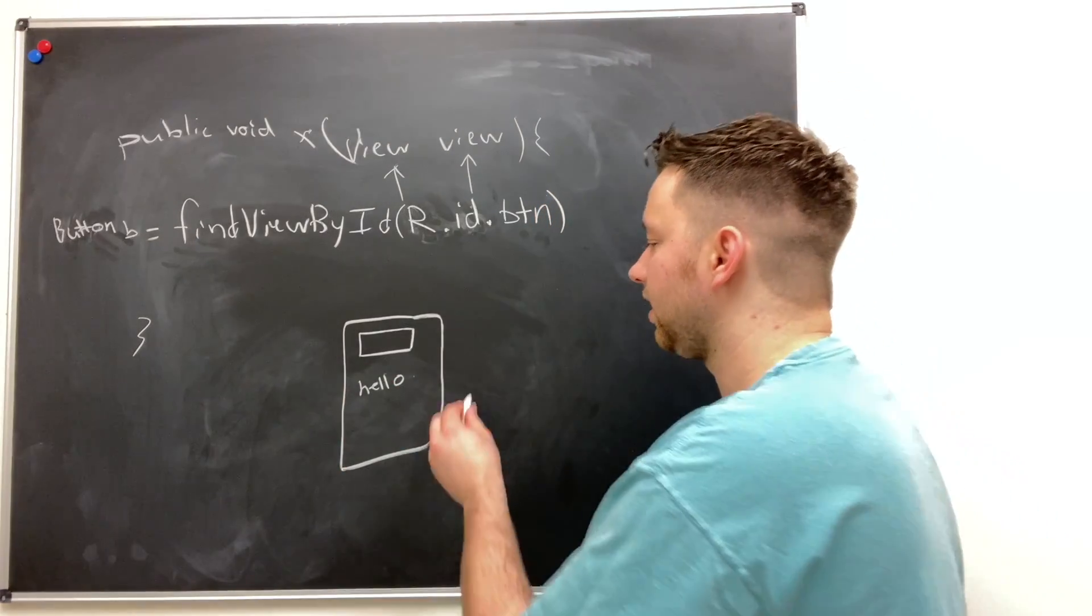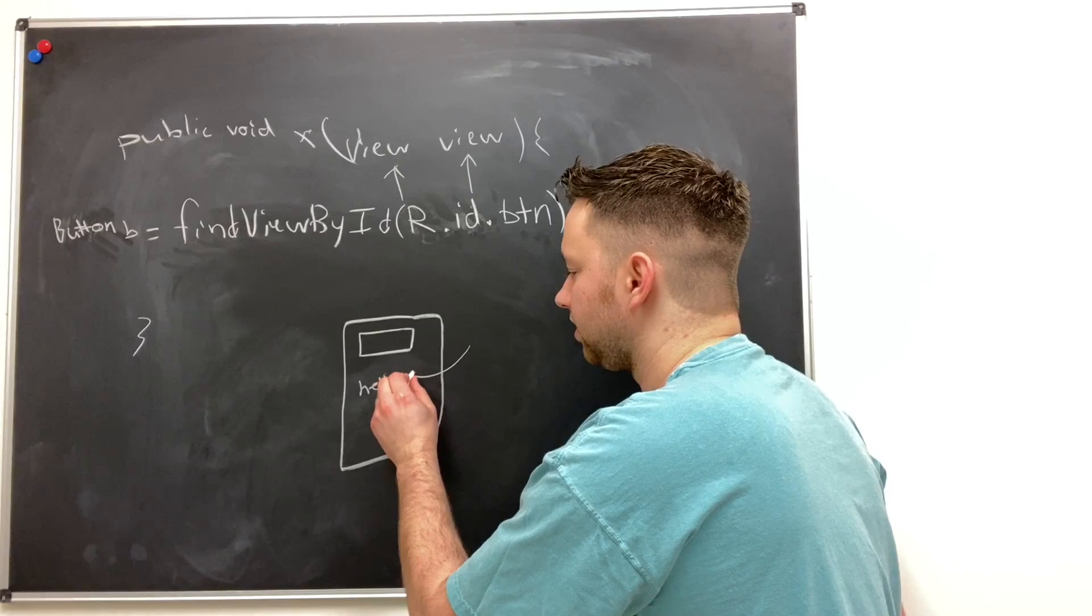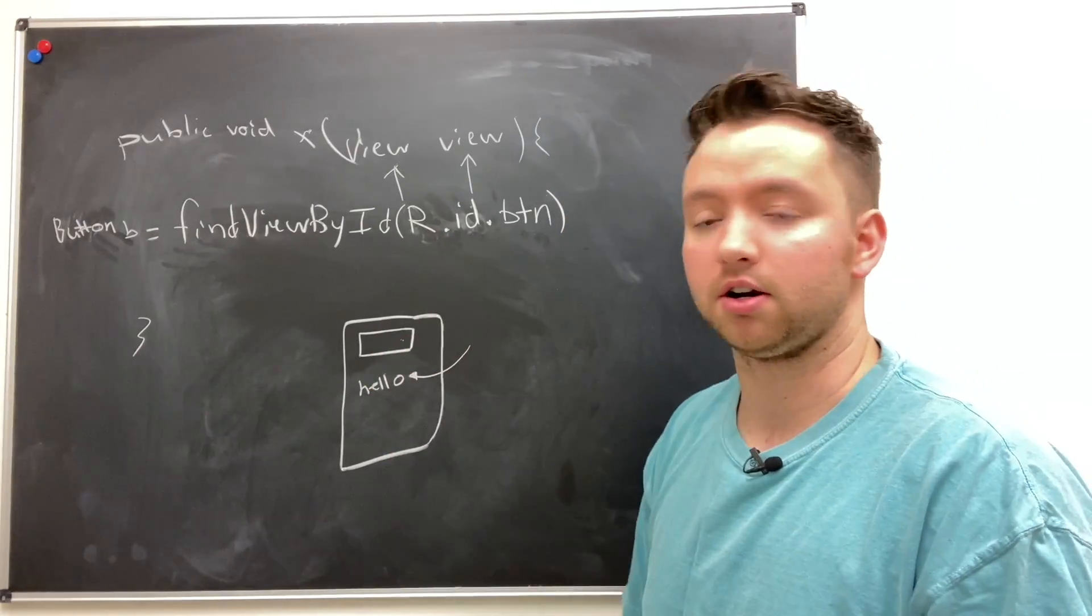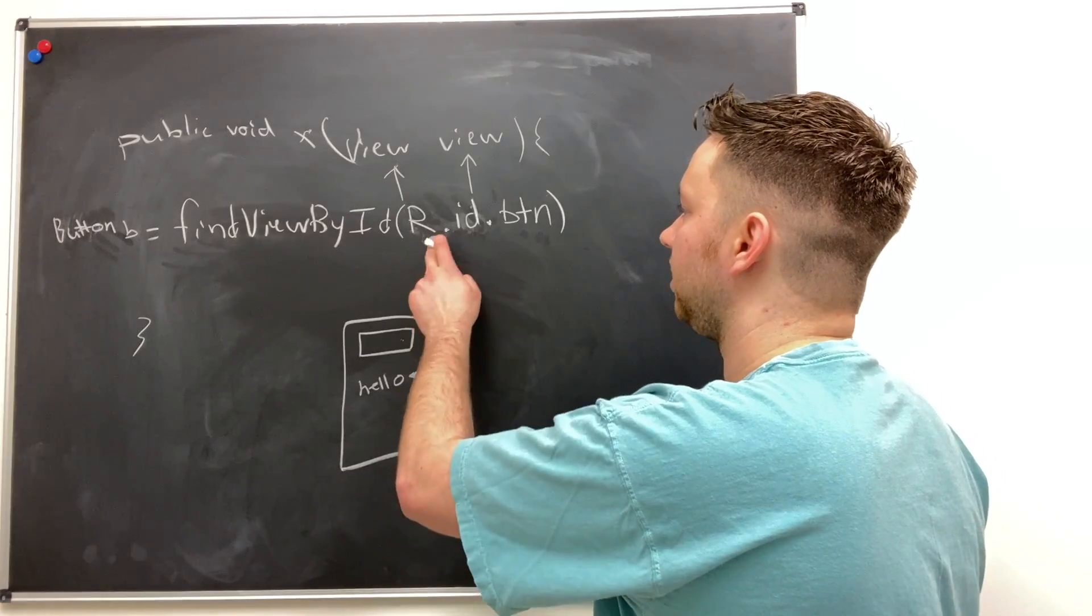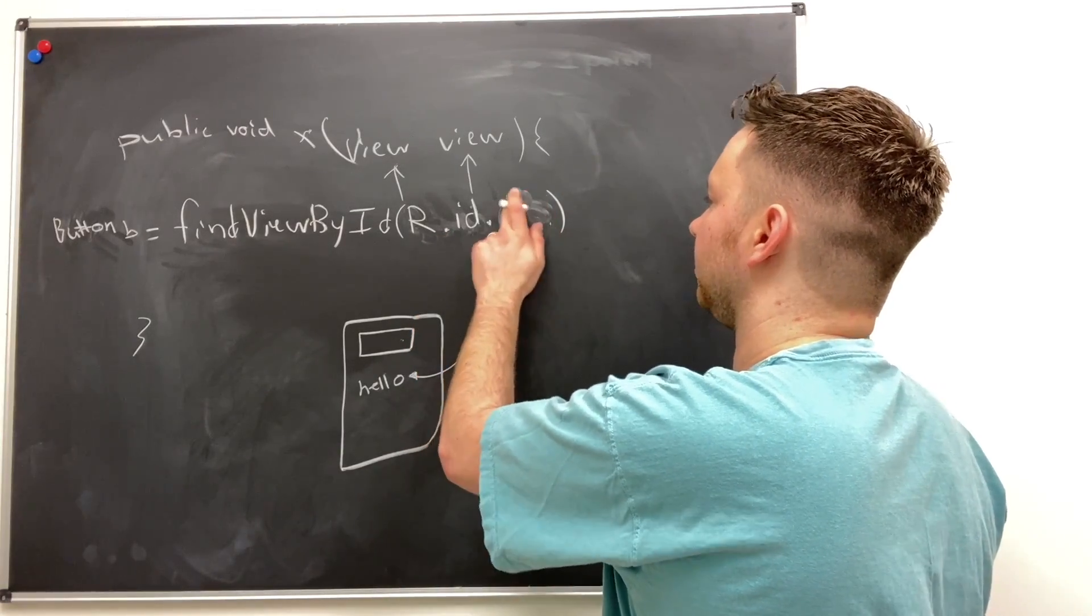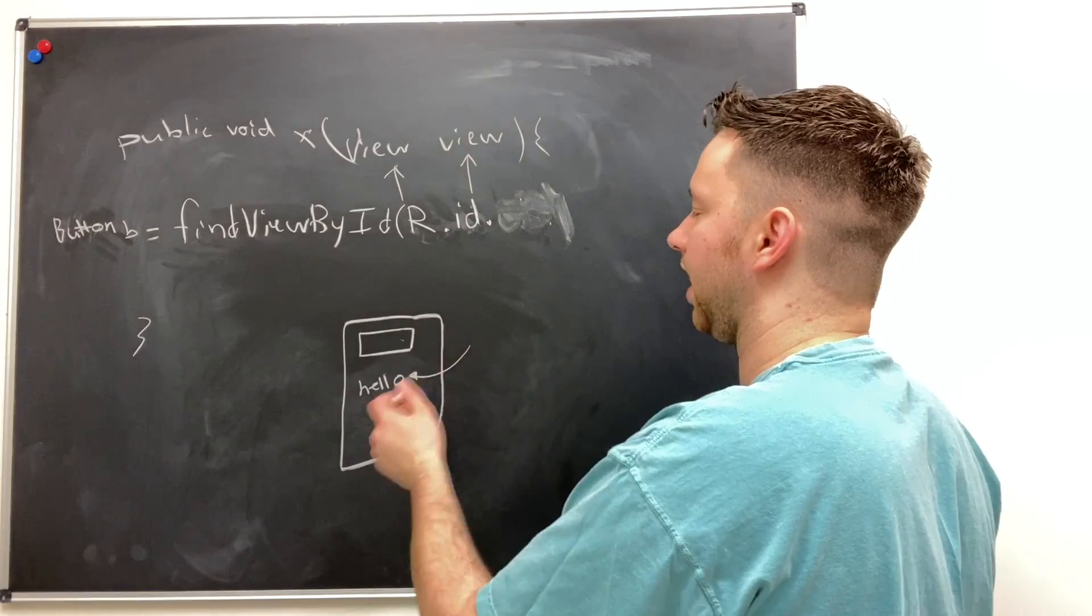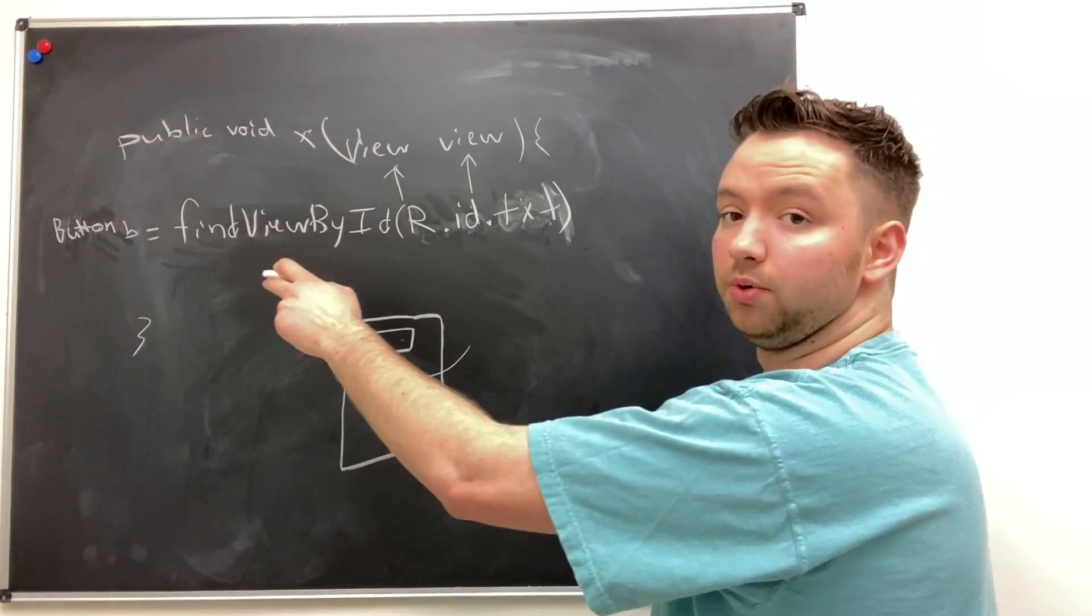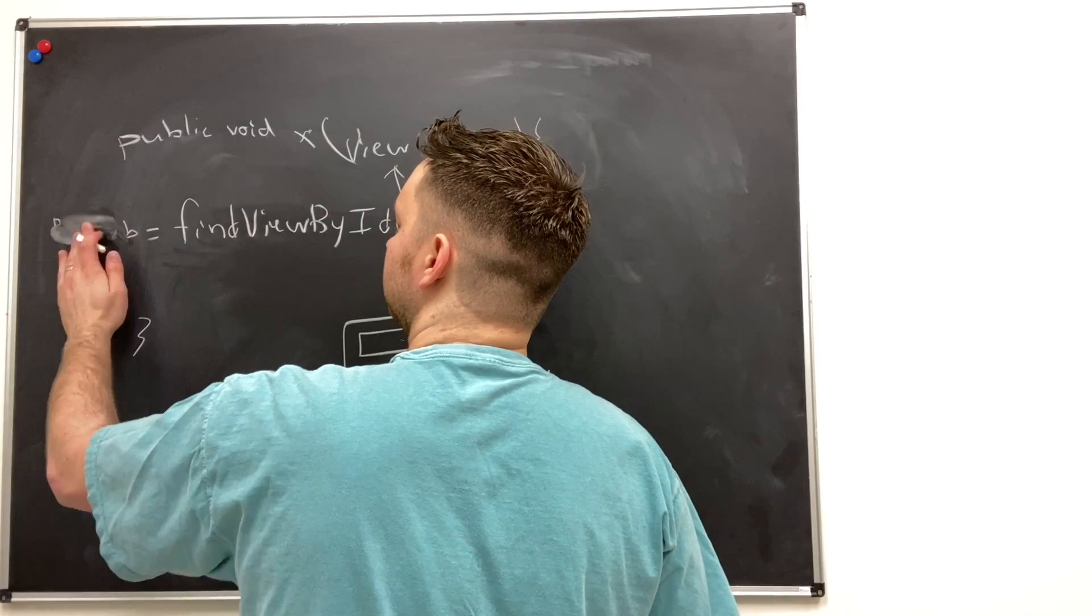What we can do is we can actually change the value of this text when we click this button using this R class. So instead of getting a reference to this button here we could get a reference to this text by whatever ID we had it assigned, so for example TXT.